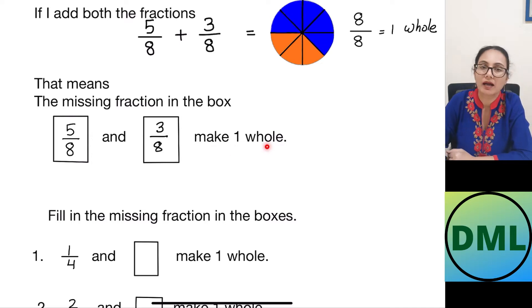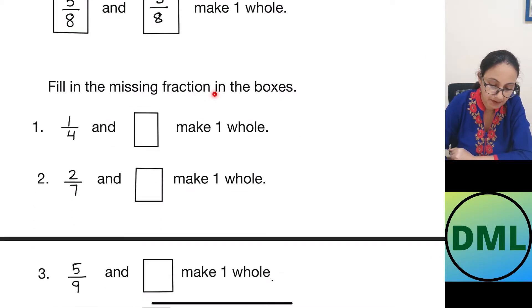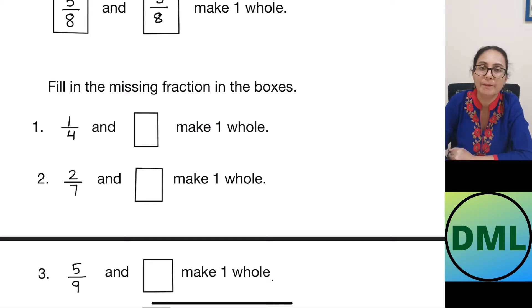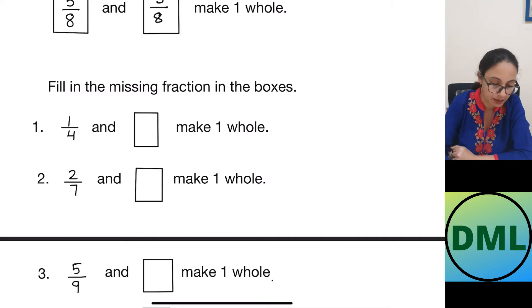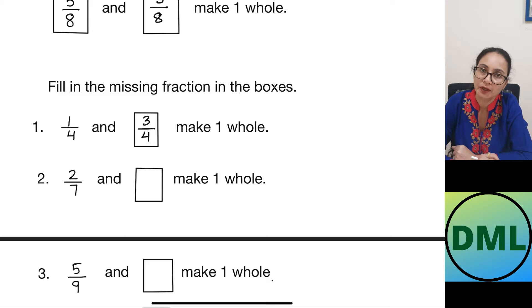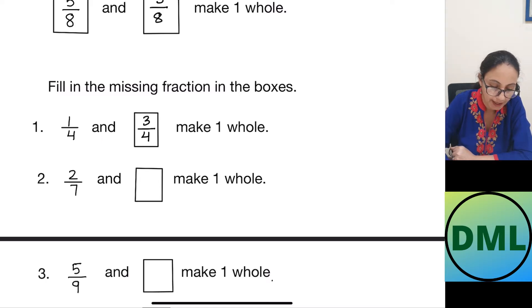Make a 1 complete whole. Now let's see a few examples. Fill in the missing fractions in the boxes. So 1 by 4 and dash make a 1 complete whole. 1 by 4 means out of 4 parts 1 part is shaded. So how many parts are unshaded? 4 minus 1 is 3 parts unshaded. So 3 will come in the numerator and 4 in the denominator — 1 by 4 and 3 by 4 will make 1 complete whole.